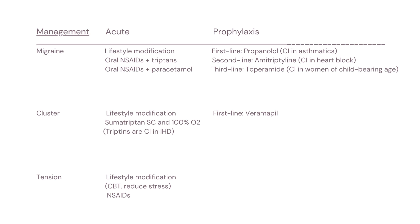In terms of long-term prevention and prophylaxis, the first-line prophylaxis for migraines is propranolol, which is a beta blocker — this should be used carefully as it is contraindicated in asthmatics because it can cause bronchospasm. Second line would be amitriptyline, which is contraindicated if the patient has an MI or heart block. Third line is topiramate, which is contraindicated in women of childbearing age. For cluster headaches, the prophylaxis would be verapamil.